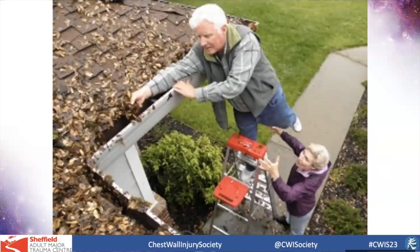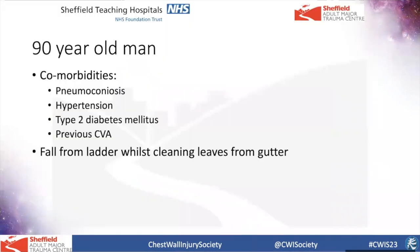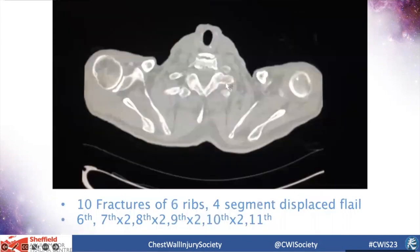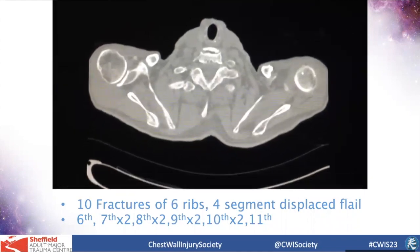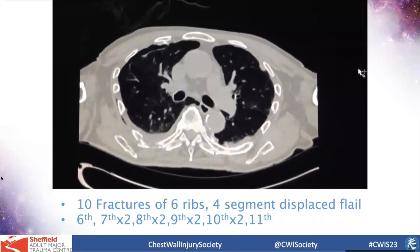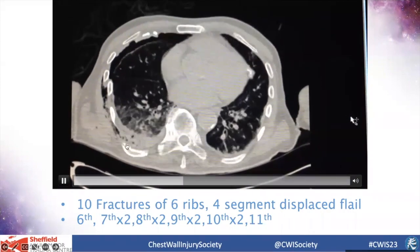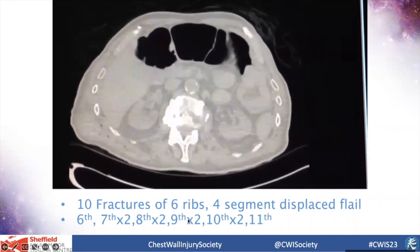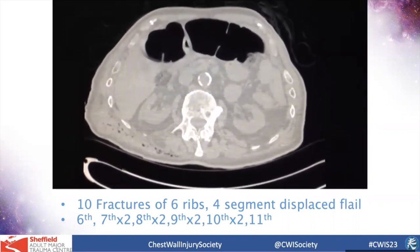To give a case example — this is a 90-year-old man with a number of comorbidities who fell from a ladder whilst cleaning leaves in a gutter. On his chest radiograph it's actually quite difficult to see what's going on. On the axial CT, we often use 3D reconstructions. Looking at the posterolateral sector you can see displaced fractures, and when you characterise the injury you can see he has a four-level displaced flail segment — in that sort of patient, that is a very significant injury.